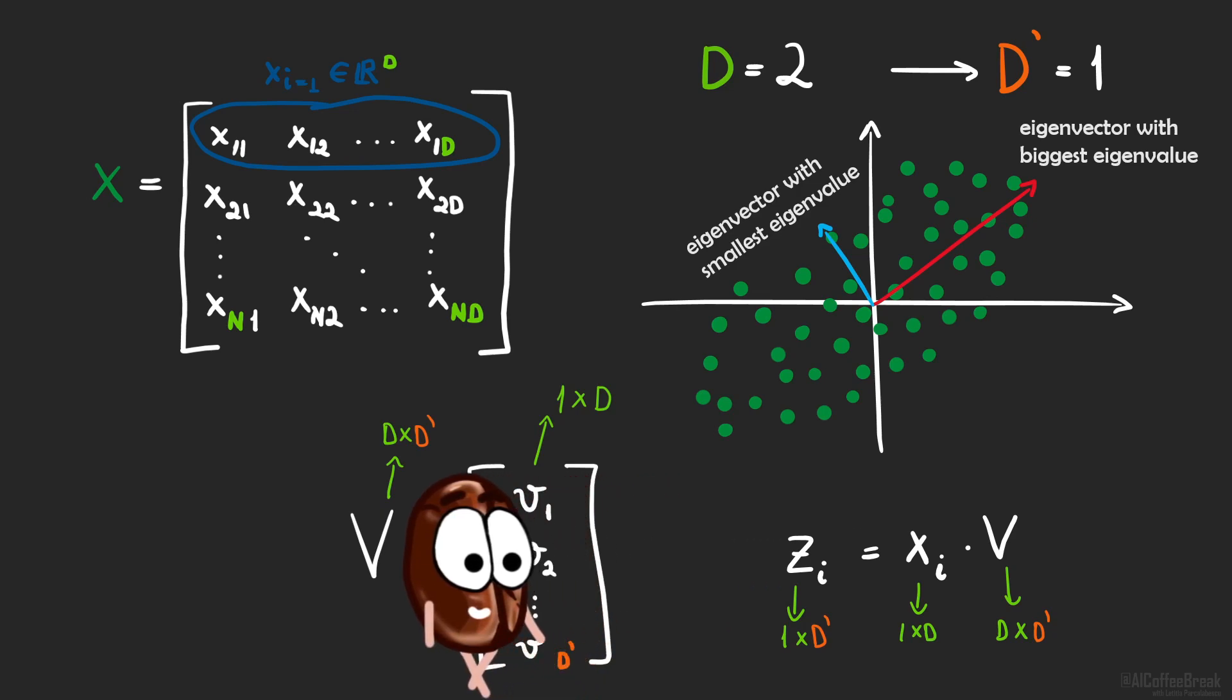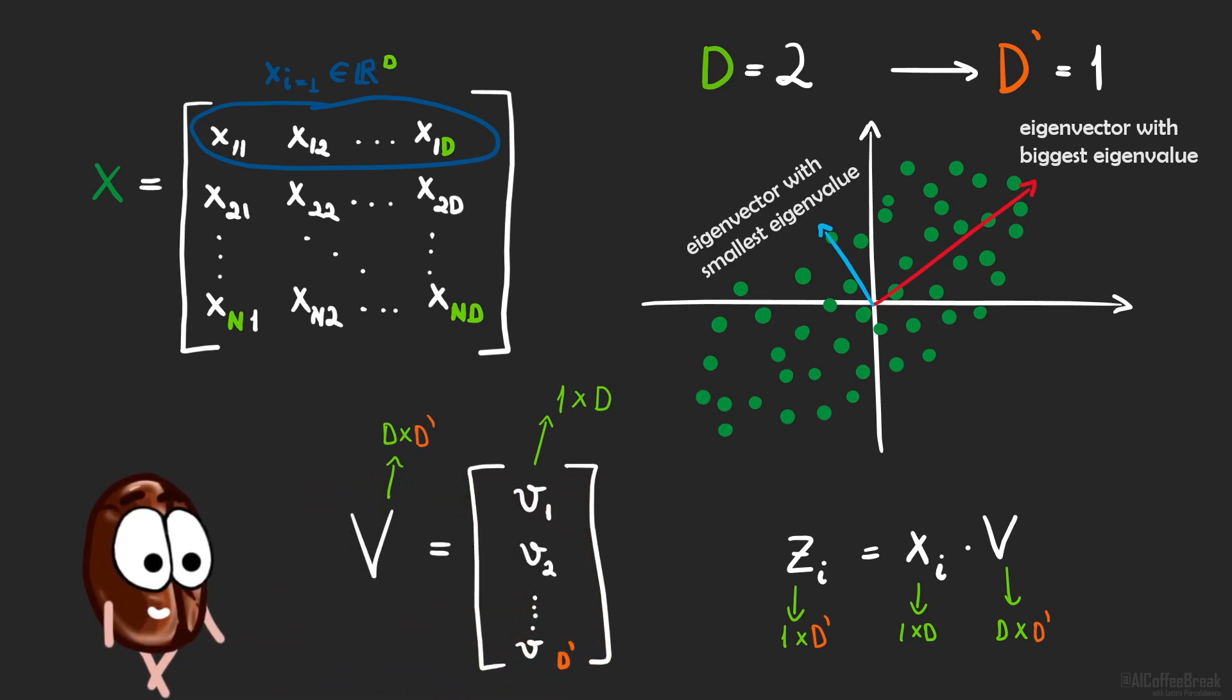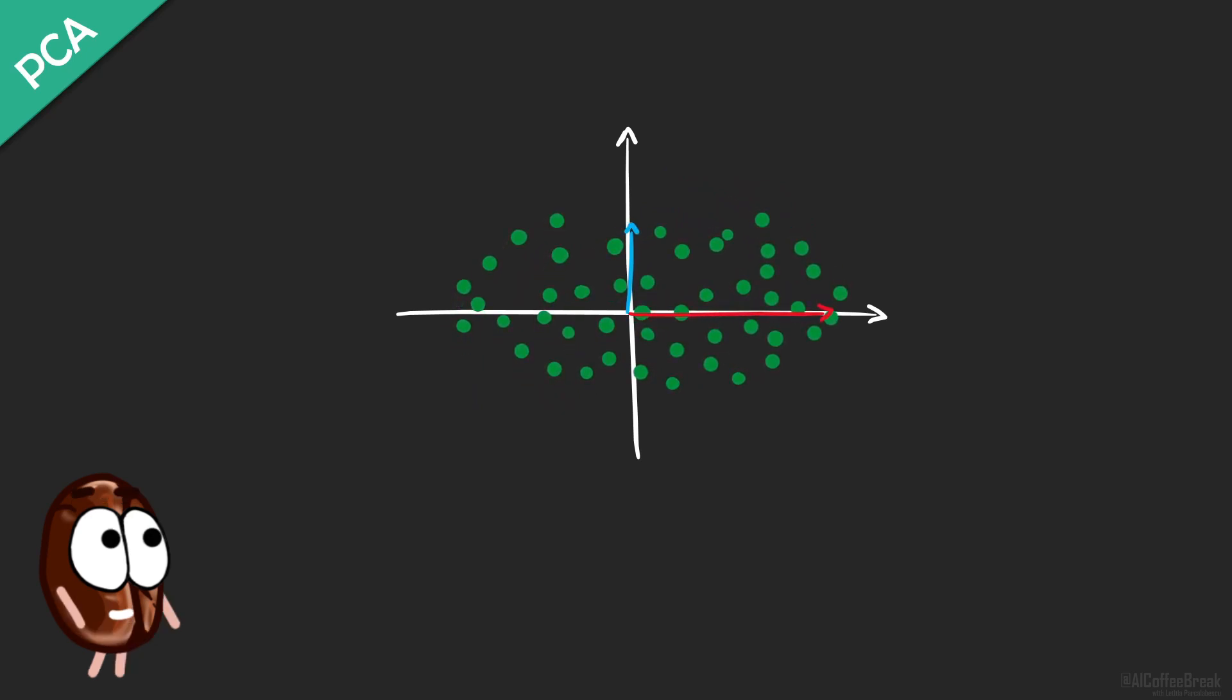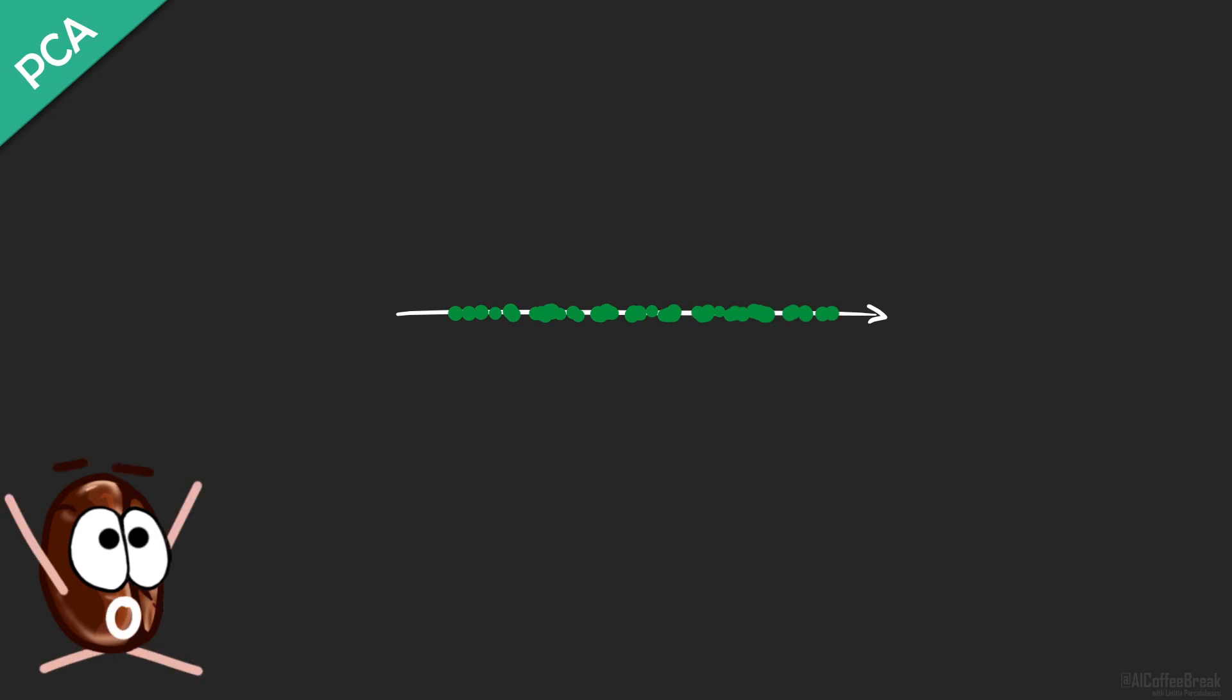So, because v projects our points x from a higher dimensional space into a lower dimensional space d prime, we call v the projection matrix. What this projection matrix actually does is it rotates the data and maps it to a new space with lower dimensionality than the original one. And that was it.